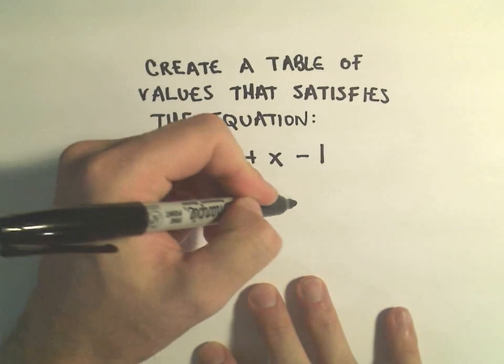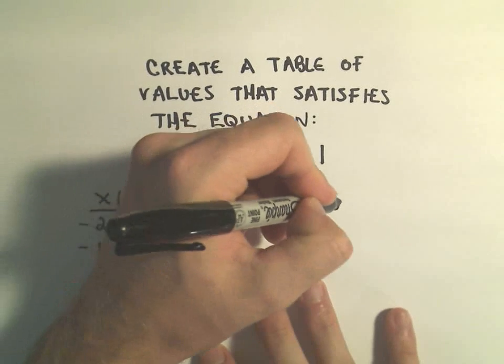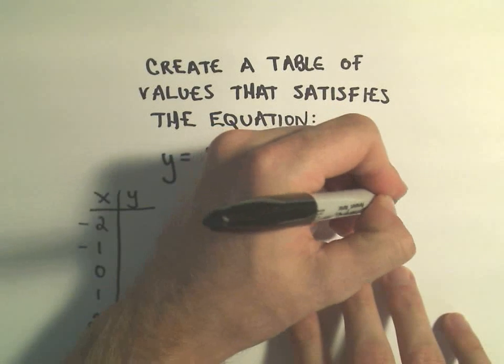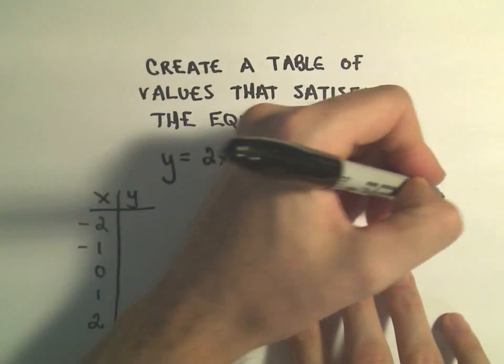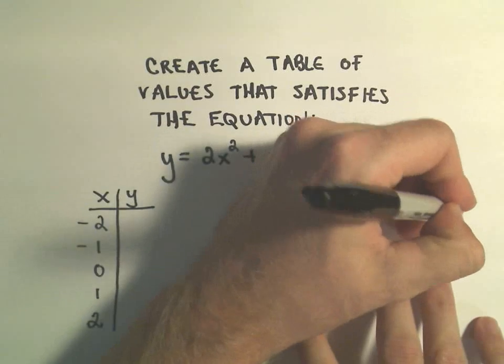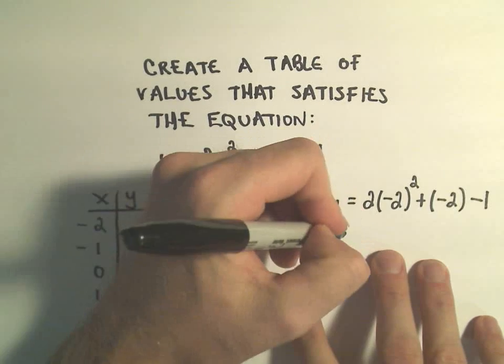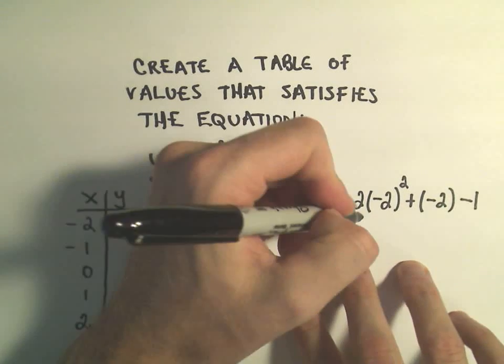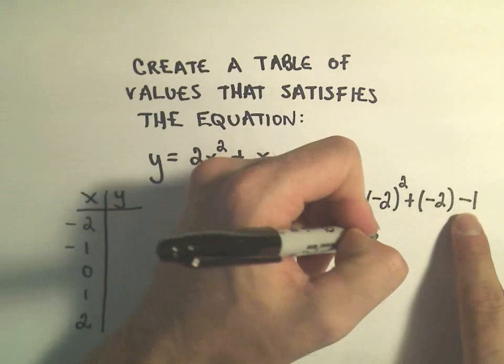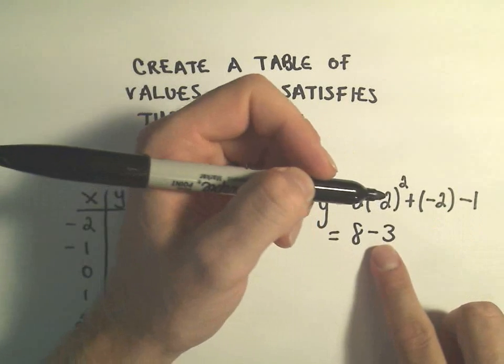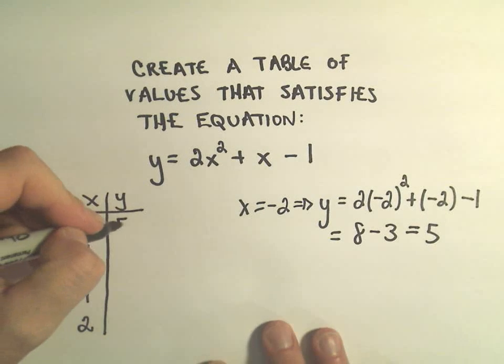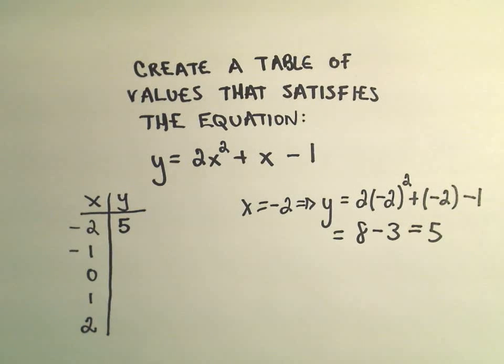So if we plug in x equals negative 2, we'll get that y equals 2 times negative 2 squared plus negative 2 minus 1. Well, negative 2 times negative 2 is 4, 4 times 2 is 8, negative 2 minus 1 is negative 3. So I'm getting the value 5 out. So if you plug negative 2 in, we get 5 out.